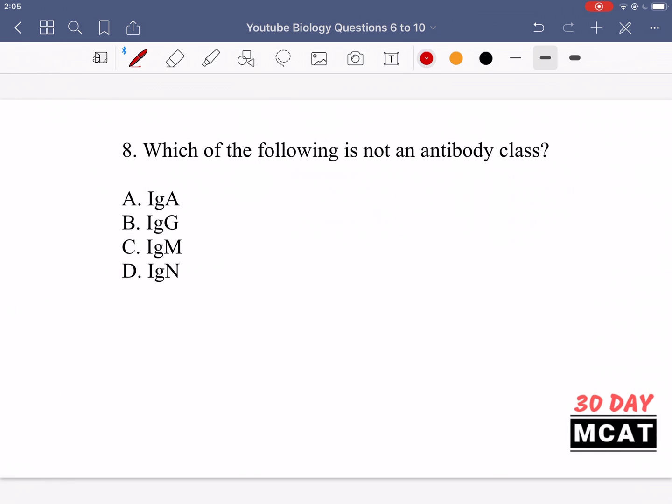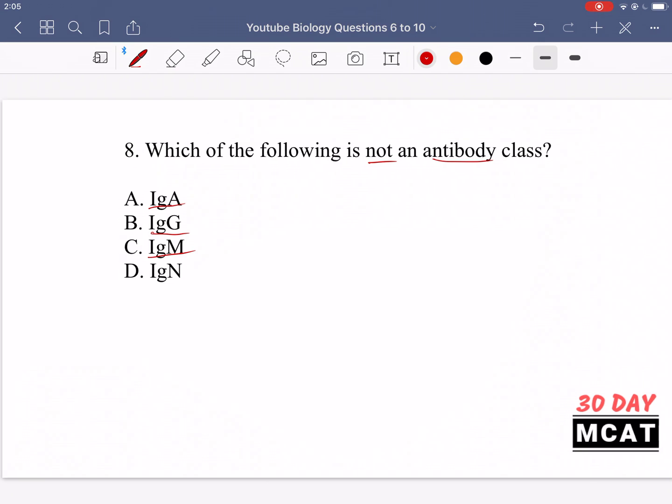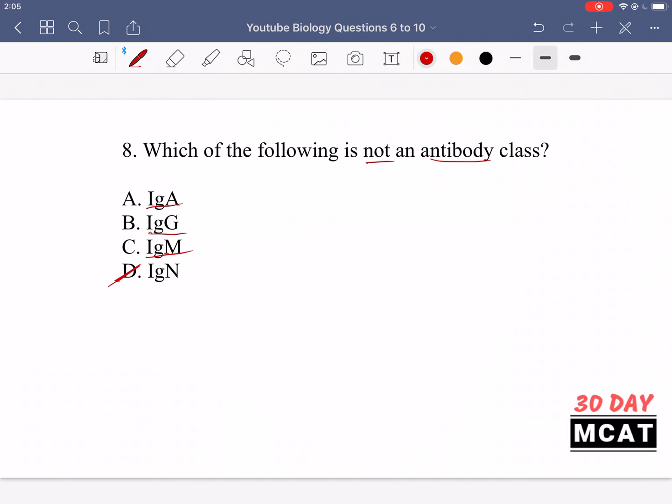In question 8, we're asked which of the following is not an antibody class? So this question relies on you understanding the immune system and then the different types of antibody classes we have in our body. So this is kind of a memorization and understanding question. And if you have enough experience with the immune system, you should know that options A, B, and C are correct. So IgA, IgG, and IgM, they all exist. But this last one, this immunoglobulin N, it does not exist. Therefore, it is the correct answer because we're looking for an antibody class that does not exist. So immunoglobulin N, that does not exist.